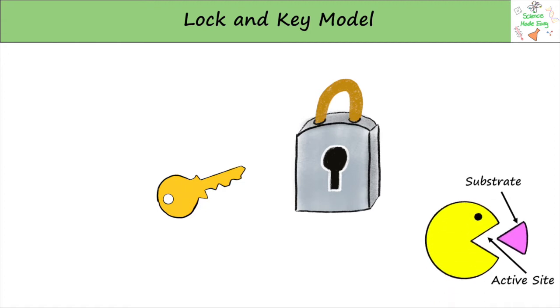On an enzyme, the active site is a particular shape so that only the correct substrate can fit in to react. The substrate is the reaction we are trying to speed up.